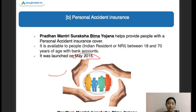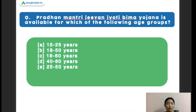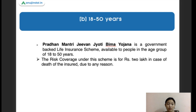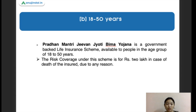Next question: Pradhan Mantri Jeevan Jyoti Bima Yojana is available for which age group? Options are 15–25 years, 18–50 years, 18–60 years, 40–60 years, and 45–50 years. The right answer is 18 to 50 years of age. This is a government life insurance scheme available to people aged 18 to 50 years, with risk coverage for life in case of death of the insured due to any reason.